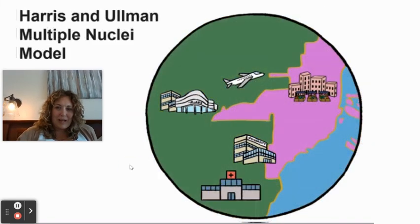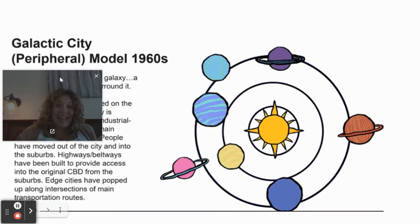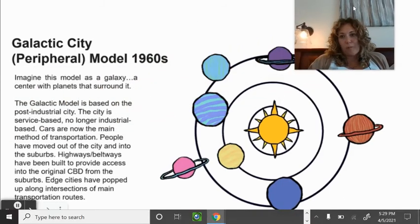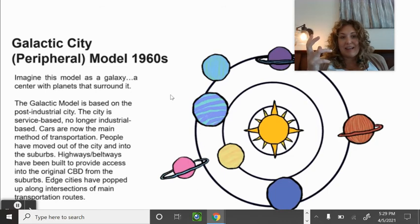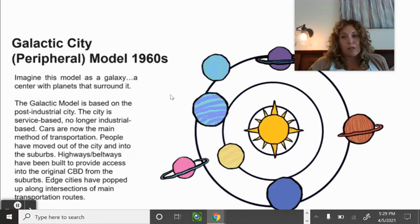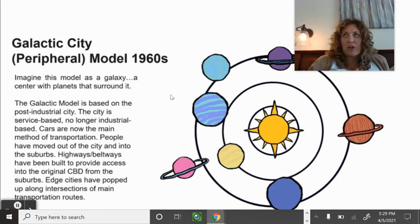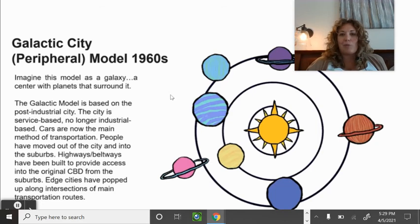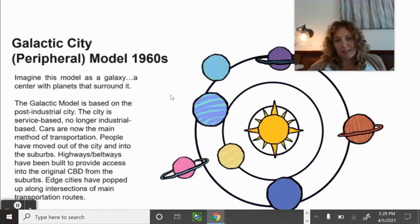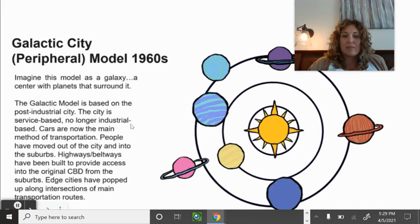The Galactic City — also called the peripheral model: imagine the model is a galaxy, a center with planets around it. The galactic model is based on the post-industrial city — where the city has moved past industrial production and into research centers, universities, or high-tech. They're not necessarily making products anymore but inventing or researching them. Cars are now the main method of transportation, people have moved into suburbs, and highways and beltways provide access to the original CBD.